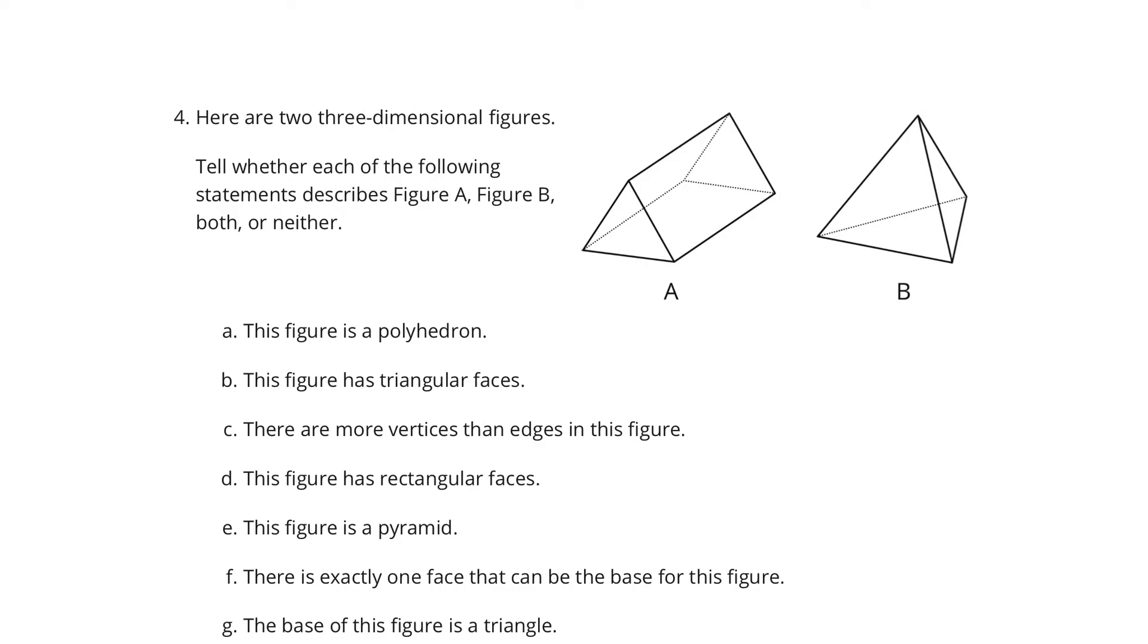4. Here are two three-dimensional figures. Tell whether each of the following statements describes figure A, B, both, or neither. Well, in A, this figure is a polyhedron. It's true for both. One's a prism, one's a pyramid. That's true. This figure in B has triangular faces. Both for these. There are more vertices than edges in this figure. That's neither for both of those. D, this figure has rectangular faces. That's just A, and you can see one, two, three. E, this figure is a pyramid. Well, there's only one of them that has one base, and that's B.